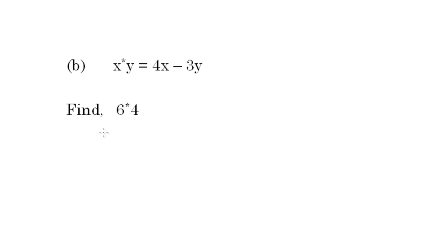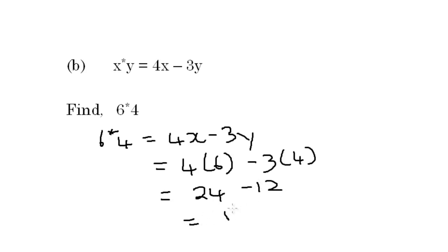So we're going to substitute 6 for x and 4 for y in this equation 4x minus 3y. That is equal to 4 times, we're substituting 6 for x, we'll put 6 right here. And 4 times 6 is 24. 3 times 4 is 12. And that is equal to 12.